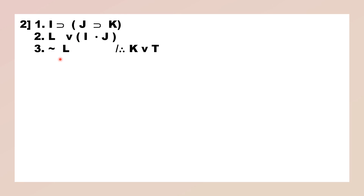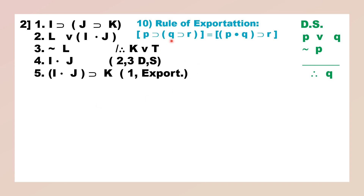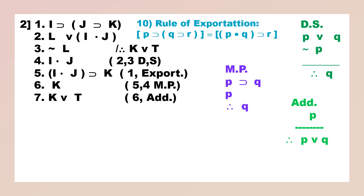Now we come to the second example. We can apply the rule of DS to lines 2 and 3 because we have a disjunctive statement and the negation of the first disjunct — we can infer the second disjunct via DS. Now we want K. What we will do is bring them together and apply Exportation. This is given to you — you can replace it. Now you have the antecedent with you, so you can derive the consequent by M.P. Once you have arrived at K, you just add T to it by the rule of Addition. Thus we have arrived at the conclusion.